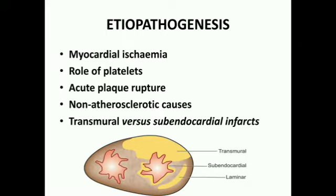Fourth are non-atherosclerotic causes. While atherosclerosis accounts for about 90 percent of cases, the remaining 10 percent may not have atherosclerosis but may have coronary vasospasm, arteritis, coronary ostial stenosis, embolism, thrombotic disease, trauma, or outside compression — conditions also described in relation to angina pectoris.